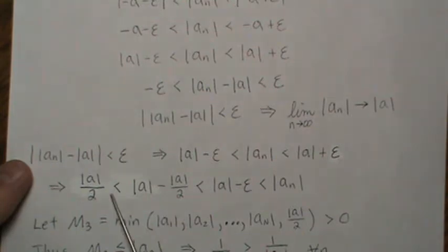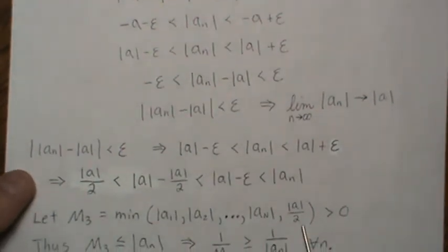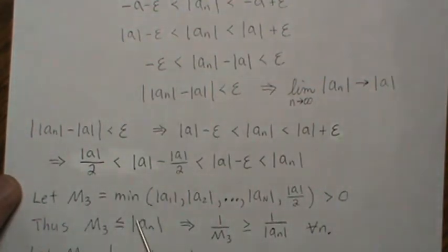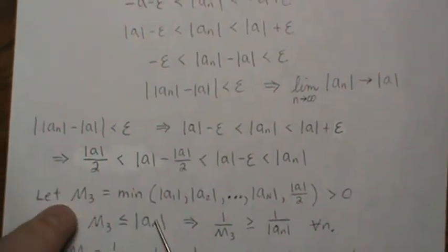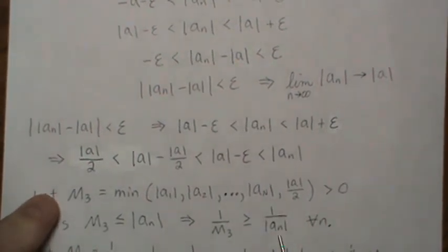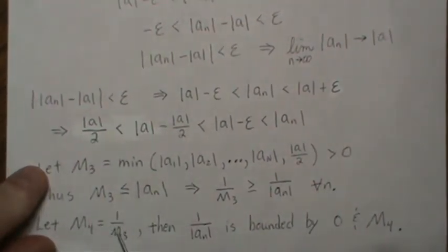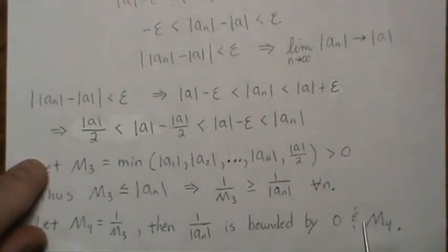If we let M3 be the minimum of the absolute values of the first capital N observations and this bound — because once we get past big N they're always bigger than that — we find the smallest one. They're all strictly greater than zero, since absolute value is non-negative but no An or A can be zero. So M3 is less than or equal to all possible |An|. Taking the reciprocal, 1 over M3 is bigger than 1 over |An| for all n. So if we let M4 be this quantity, then 1 over the absolute value of An is bounded above by M4 and below by zero. So it is a bounded sequence.